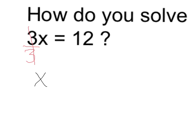In order to balance the equation, to keep the value the same, I have to do the same thing to both sides. I can't just divide one side but not the other, so I'm going to divide my 12 by 3. 12 divided by 3 is equal to 4.